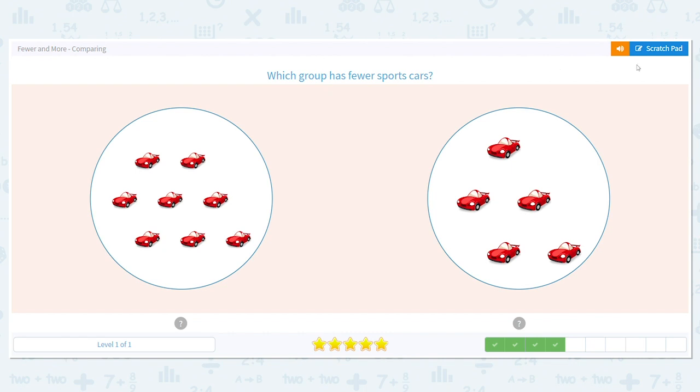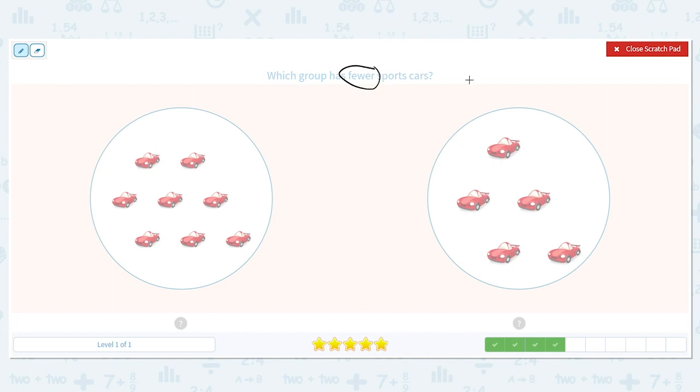Let's do another one. Which group has fewer sports cars? So again, I'm going to circle fewer. So it's a keyword I'm looking for. All right, let's count the first group. You count out loud as I cross them out. How many did you get? Eight. Good.